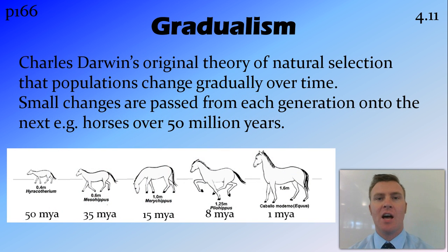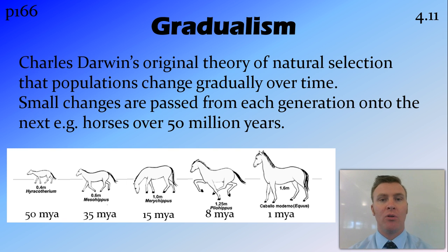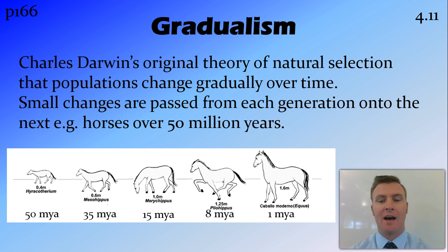Gradualism is Charles Darwin's original idea of natural selection, that populations get small changes and gradually change over time. These small changes are passed on from one generation to the other. For example, horses over 50 million years have changed from one form that was fairly small at less than half a metre to the form we have now, and there are a lot of transitional forms in between those two.